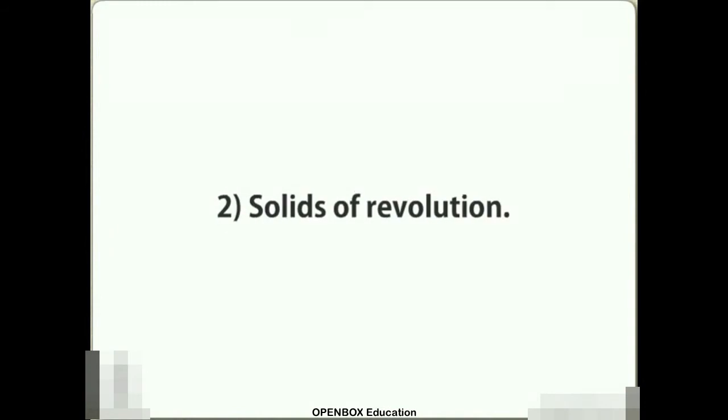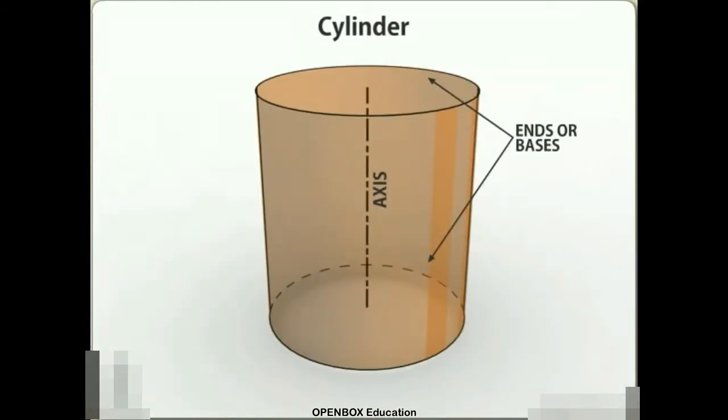Solids of Revolution. Cylinder. A right circular cylinder is a solid generated by the revolution of a rectangle about one of its sides which remains fixed. It has two equal circular bases. The line joining the centers of the bases is the axis. It is perpendicular to the bases.